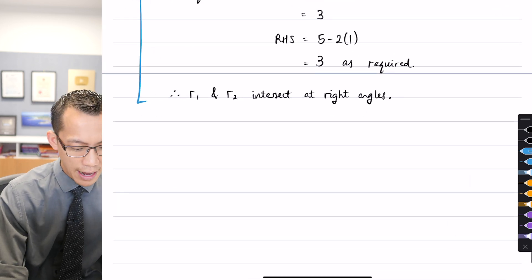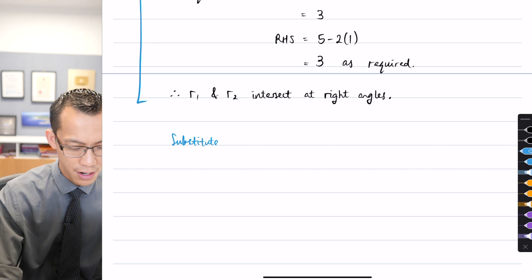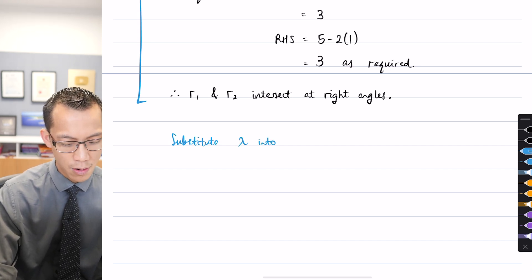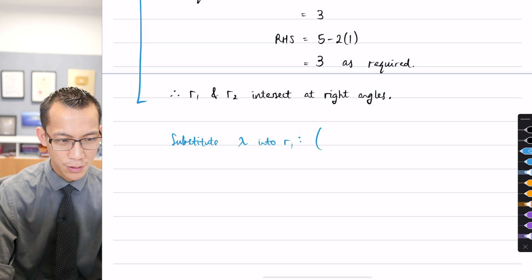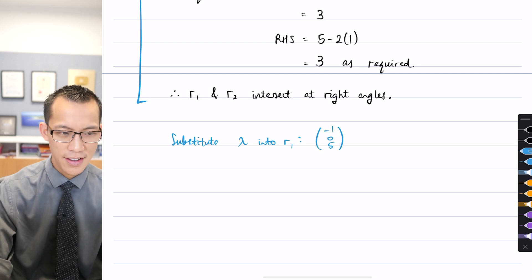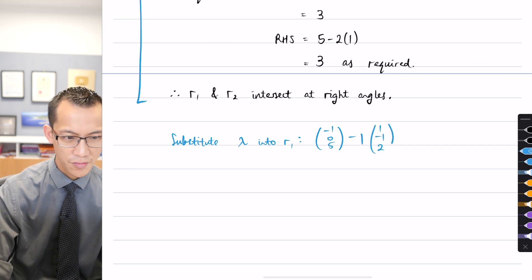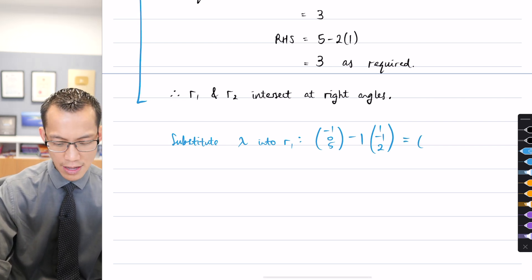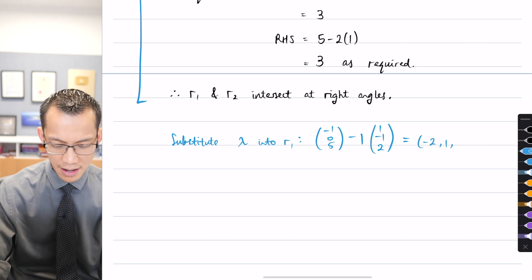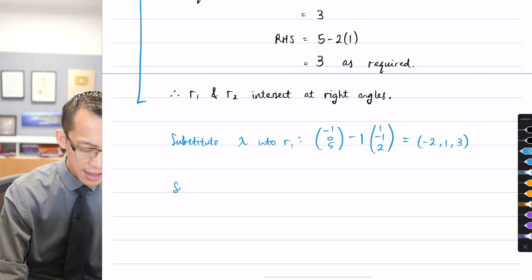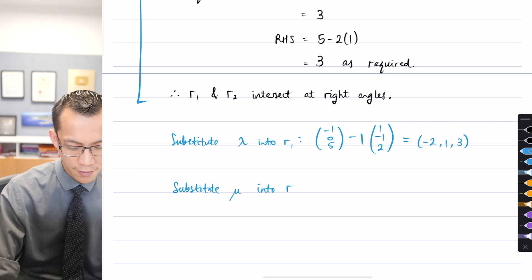So what I would have to do is I would have to substitute each parameter, lambda and mu, into their respective lines. So I would be substituting lambda into r1. So hopefully, I mean I've scrolled past it, but on your page you probably have your equation there. So it would give you, I think this is the position vector and there's my lambda and then here comes the direction vector. So when you simplify that out you should get, if you look at all of your components across, negative 2 and then 1 positive, and then that looks like a 3.